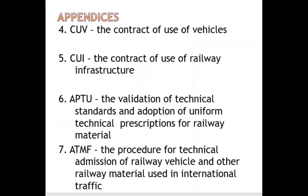The fourth appendix is the regulation on the contract of use of rail vehicles. The fifth appendix is the regulation on the contract of use of railway infrastructure — there is a separate appendix for railway vehicles and a different one for railway infrastructure. The sixth appendix covers the validation of technical standards and adoption of uniform technical prescriptions for railway materials. The seventh appendix, ATMF, covers the procedure for technical admission of railway vehicles and other railway materials used in international traffic.